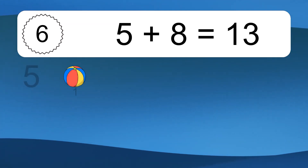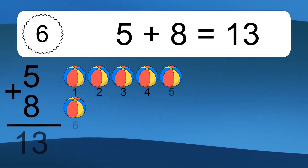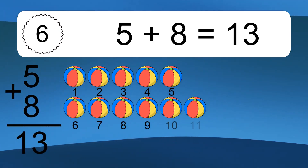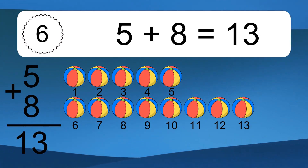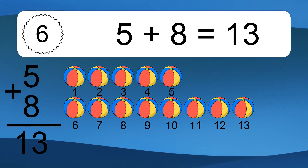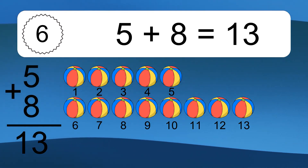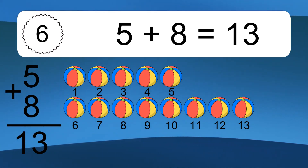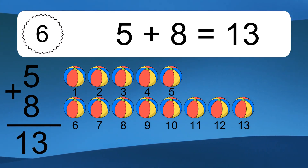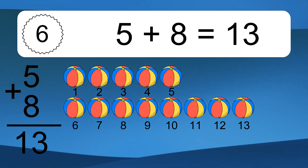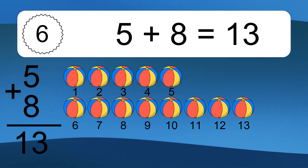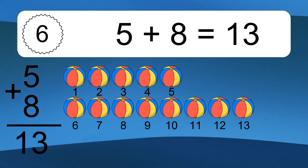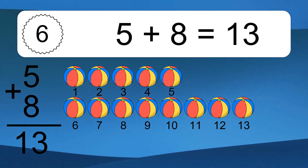5 plus 8 equals 13. Let's count it: 1, 2, 3, 4, 5, 6, 7, 8, 9, 10, 11, 12, 13.